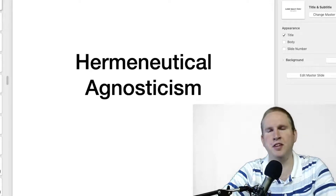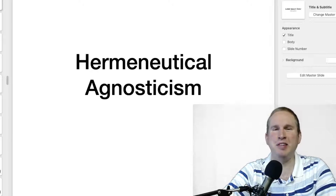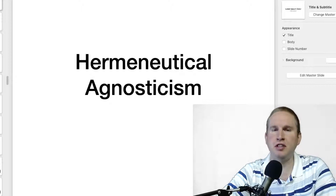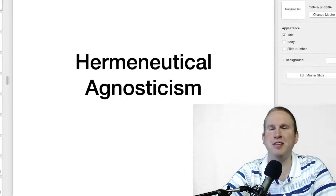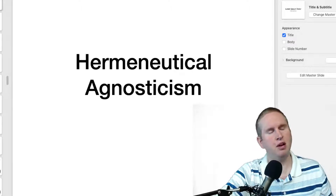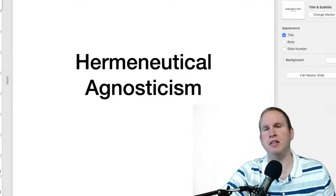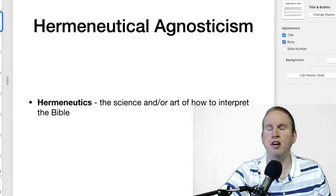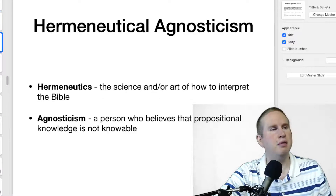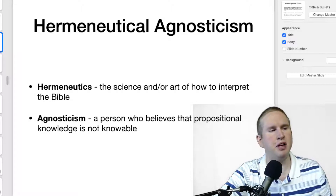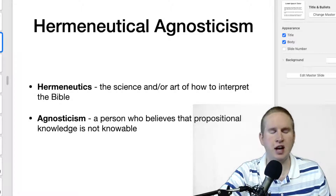Welcome everyone. We are in class two, part three of hermeneutics, and we're going to be specifically looking at hermeneutical agnosticism. You already know what hermeneutics is — it's the science or art of how to interpret the scriptures. You may have never heard the term agnosticism. Agnosticism refers to a person who believes that propositional knowledge is not knowable.